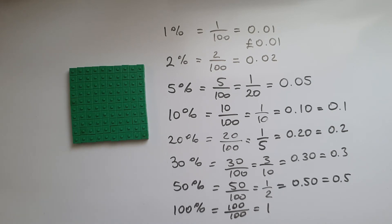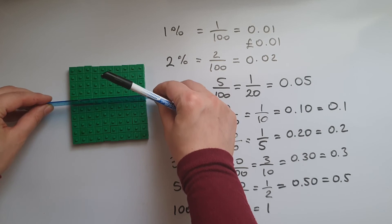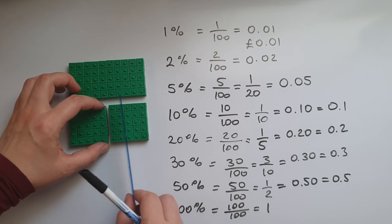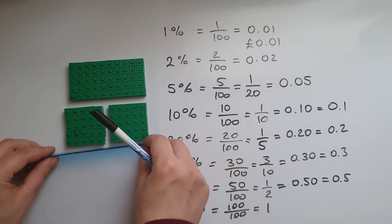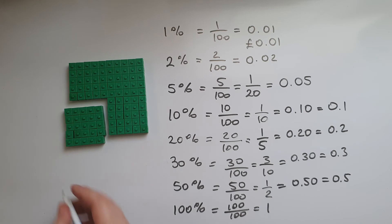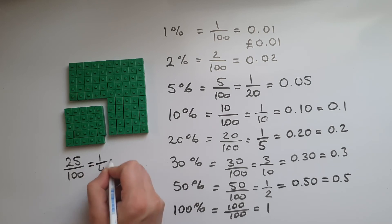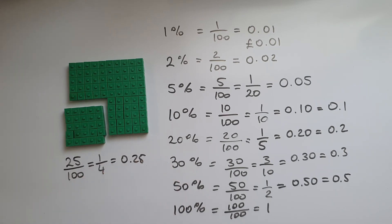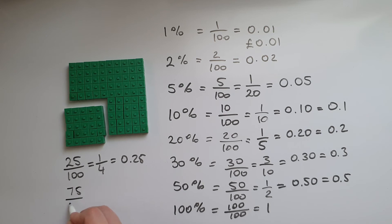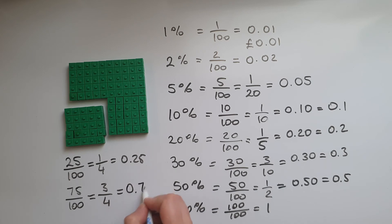25 percent, which we can split in different ways, but I'm going to show it as a quarter. So there we have 25 percent, which is 25 out of 100, which is one quarter, which is 0.25. And 75 percent is going to be 75 out of 100, which is three quarters, and we write that as 0.75.